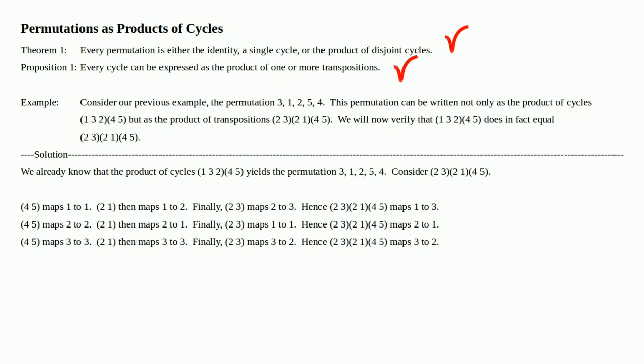Moving on. (4, 5) maps 3 to 3 because 3 doesn't appear in that transposition. (2, 1) then maps 3 to 3 because 3 doesn't appear in that one either. Finally, (2, 3) maps 3 to 2. Hence, the product of transpositions (2, 3)(2, 1)(4, 5) maps 3 to 2. So 3 goes to 3, then to 3, and therefore 3 goes to 2.